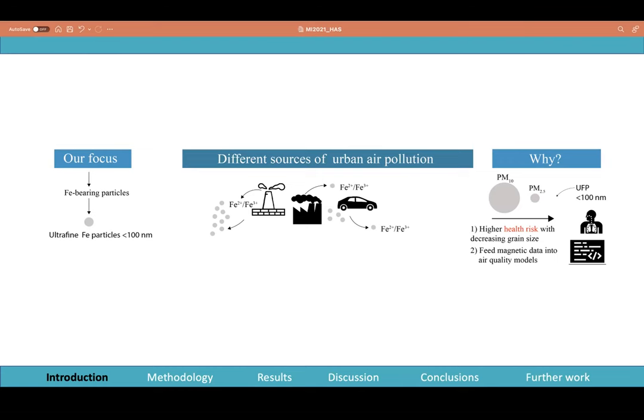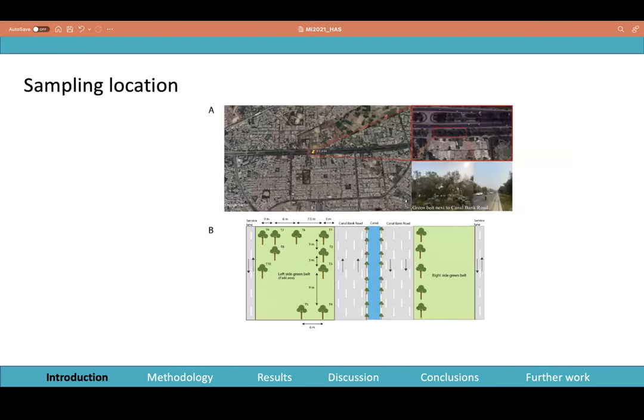The sampling location was in Lahore, Pakistan. It's a metropolitan city with a population of around 12 million people and lots of vehicles. The sample location was next to a very busy road, and as you can see in the schematic, we sampled around 10 trees which were next to the east-facing road.